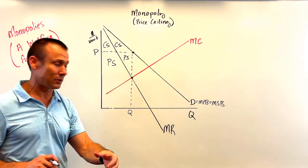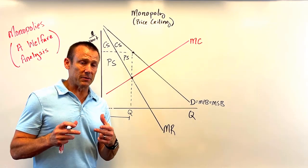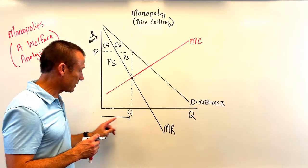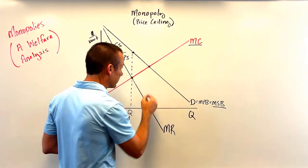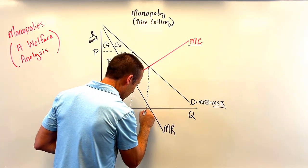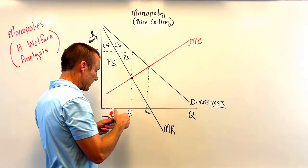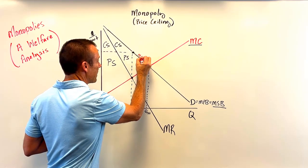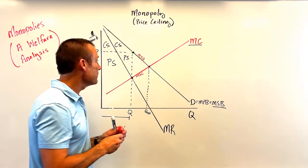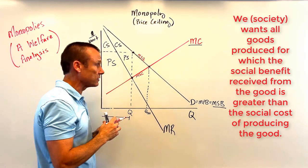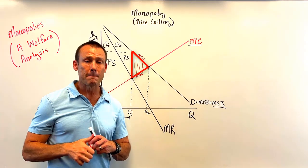Here's the problem: market power is a market failure. We're going to under-allocate resources to production of this good. Assuming no externalities, MC is the MSC. Where MSB equals MSC gives us Q-optimal — bring that down. We are under-producing this good relative to the social optimum. The triangle of units between our actual Q and Q-optimal represents goods where societal benefit exceeds societal cost, but they aren't being produced. That triangle is our deadweight loss — market power causes a market failure.